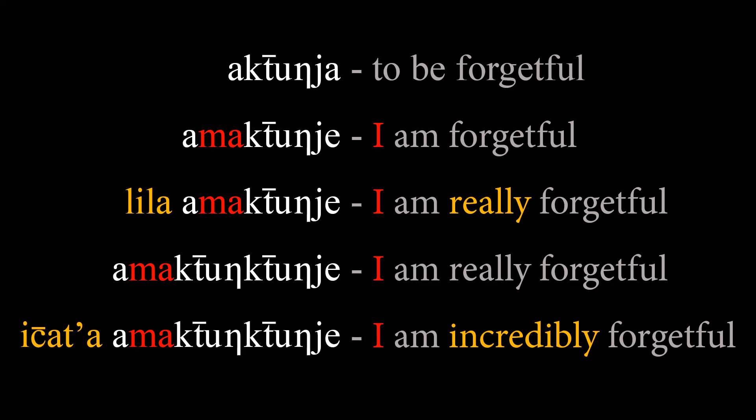'Ah maktun ja' means 'I am forgetful' — the 'ma' is 'I.' Repeat after me please: 'ah maktun ja.' One more time: 'ah maktun ja.' Very good. You can also add 'lila' in front of it — 'lila' means 'really.' You could say 'lila amaktun ja,' which means 'I am really forgetful.' Repeat after me please: 'lila amaktun ja.' One more time: 'lila amaktun ja.'